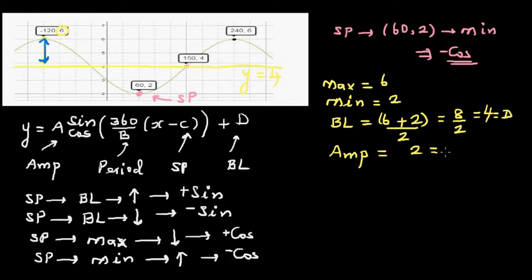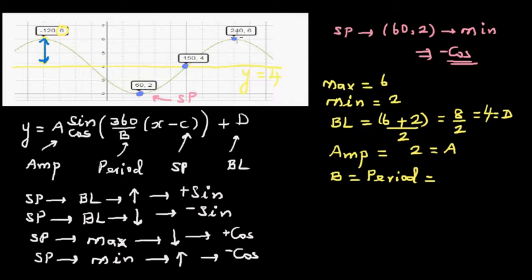Now we need to figure out B, which is the period — basically the wavelength, the horizontal distance of one full cycle. From x = 60 to x = 150 is a quarter cycle, which is 90 degrees. So a full cycle is 360 degrees, meaning the period B is 360.